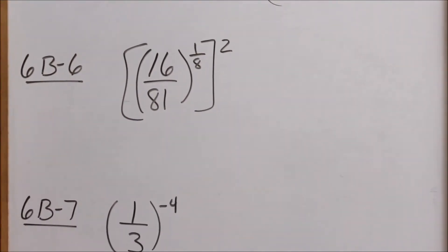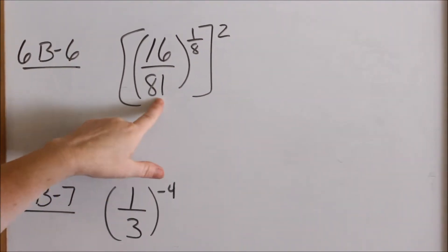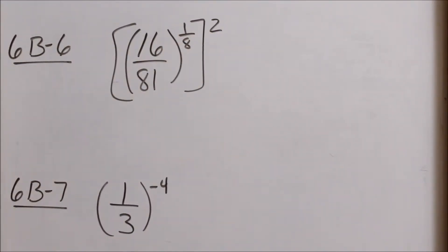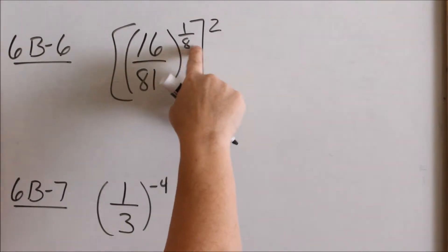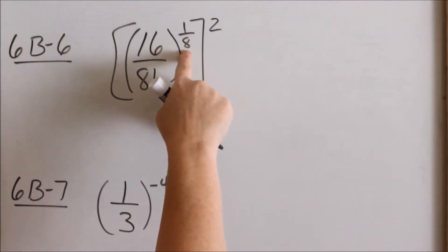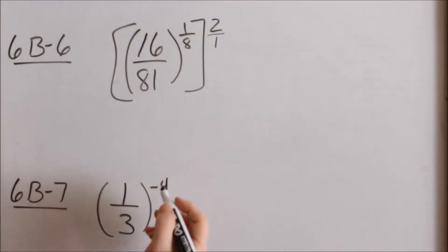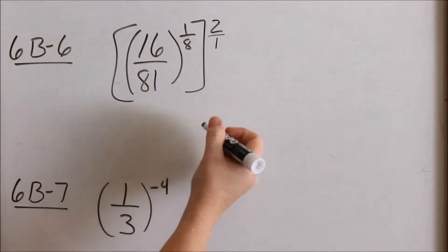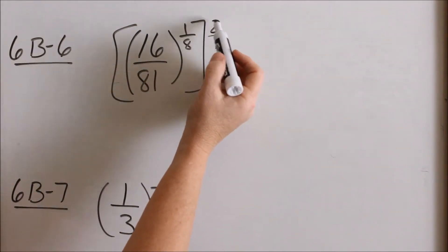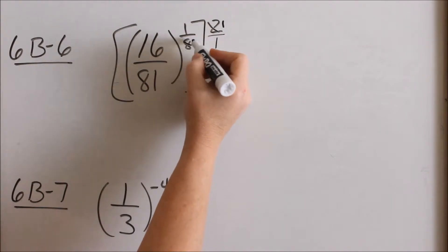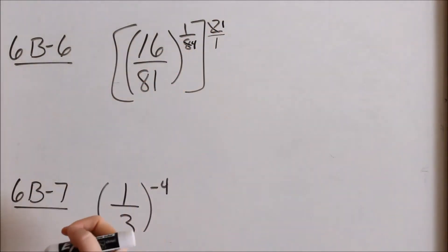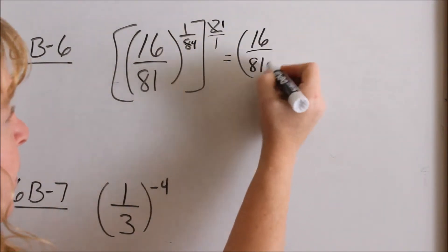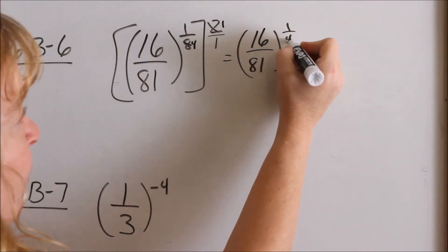Now look at 6v6. You have a fraction inside, raised to an exponent, raised to an exponent. I'm going to go ahead and multiply these exponents — an exponent raised to an exponent, you multiply them. You can turn that 2 into a fraction by putting it over 1. Do you see how my 2 and 8 will cancel? You can multiply to get 2/8, but 2/8 also reduces down to 1/4. So then you have 16 over 81 to the 1/4 power.